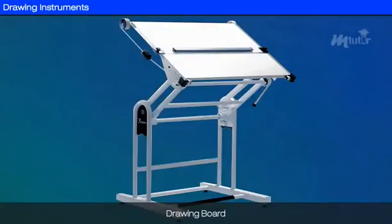These are some instruments used in an engineering drawing hall. The drawing board is made from strips of well-seasoned softwood, generally 25mm thick. It is clamped at the back by two battens to prevent warping.